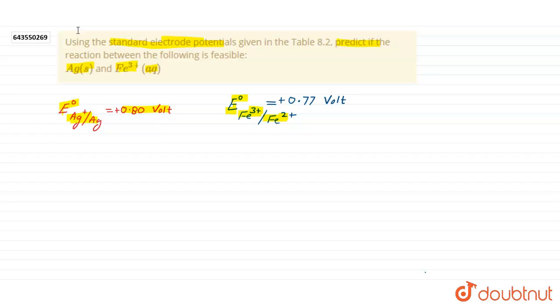Let's check if the reaction is feasible or not. We can write Ag solid will convert into Ag plus aqueous and release one electron. And this electron will be gained if reaction is feasible by Fe3 plus and give us Fe2 plus. If it is feasible, it is oxidation half reaction and it would be reduction half reaction.